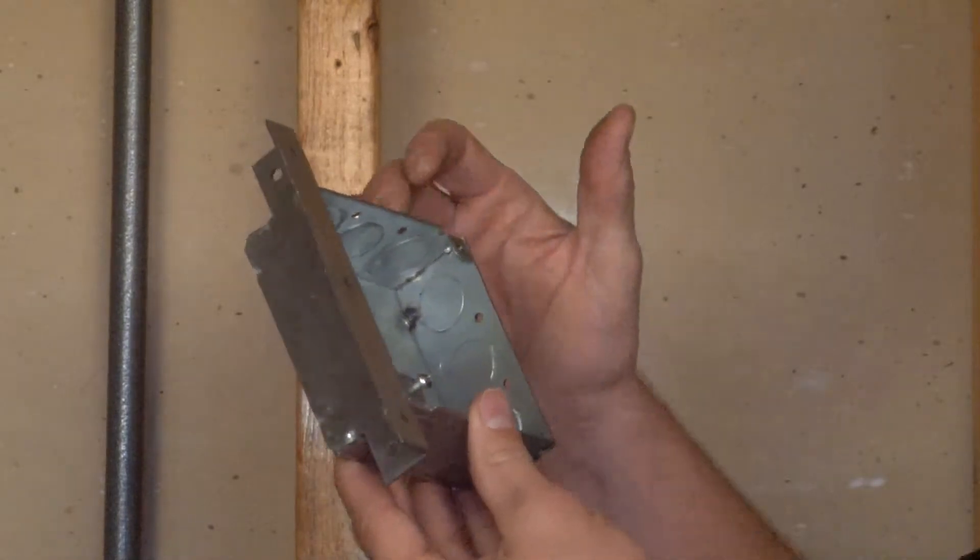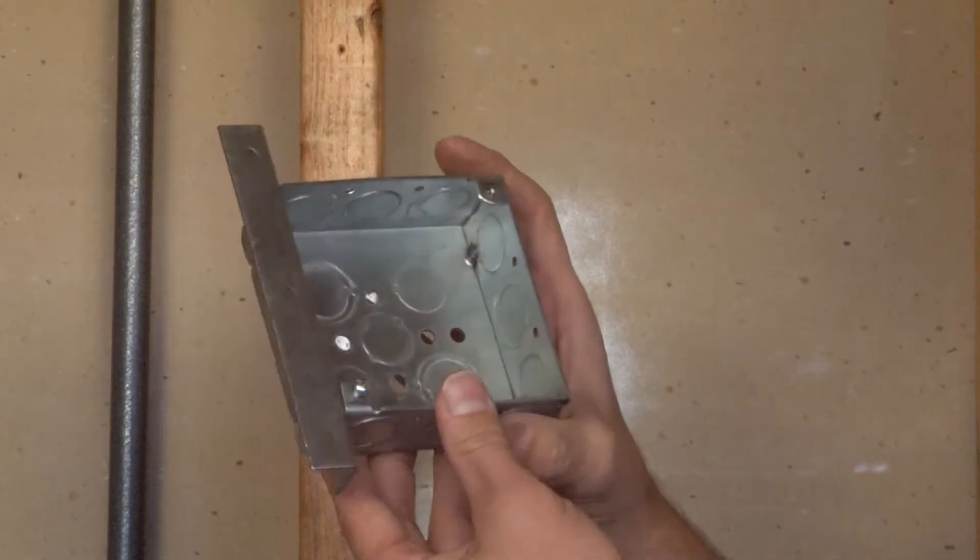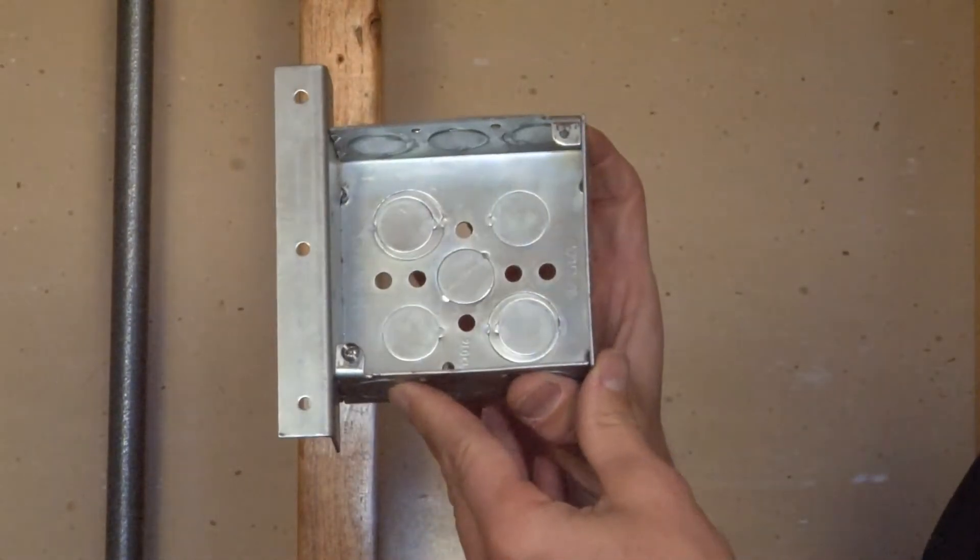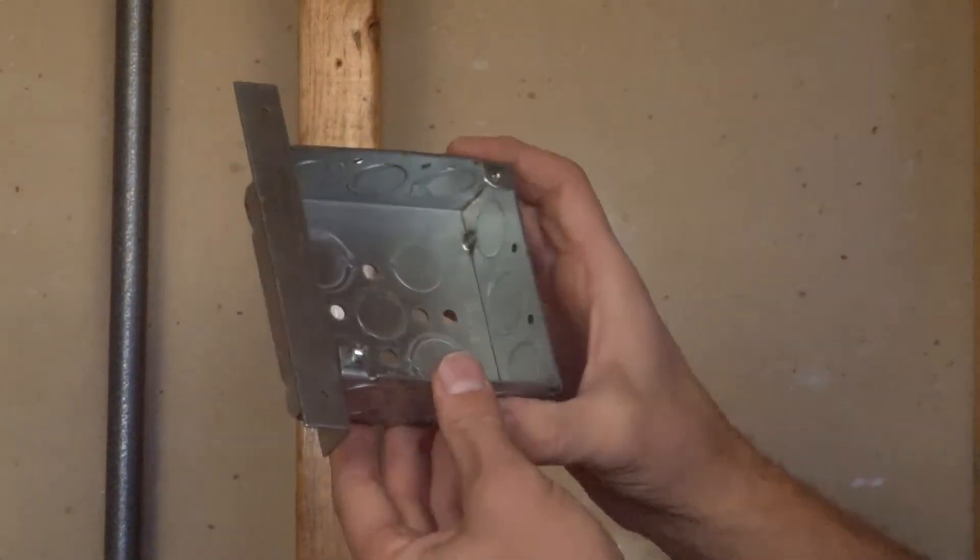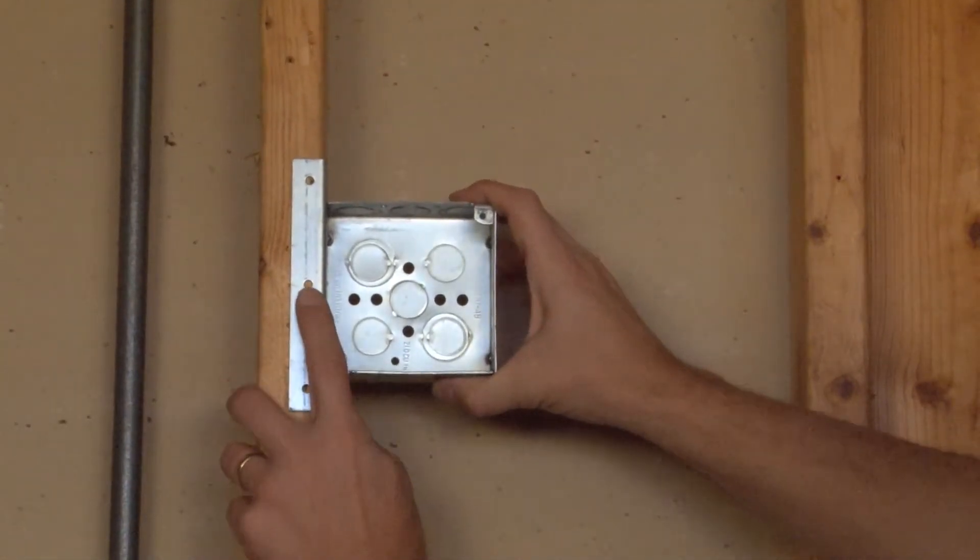This box contains a very versatile bracket that allows the installer to quickly and easily mount this electrical box on both wood and metal studs. You simply hold it up to the face of the wood or metal stud. For this installation we're using it on a wood stud.